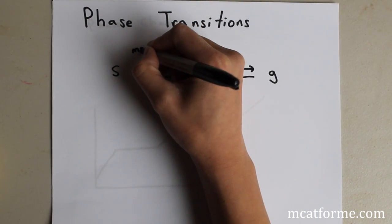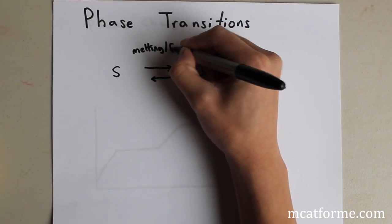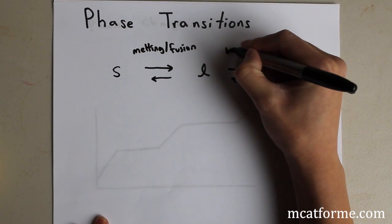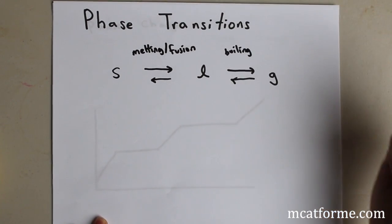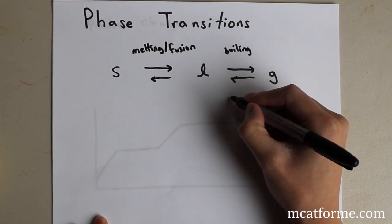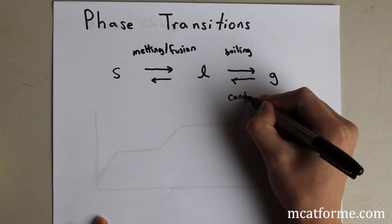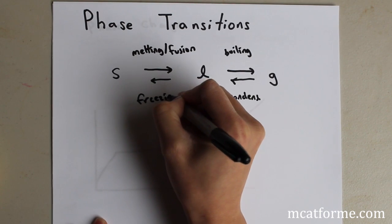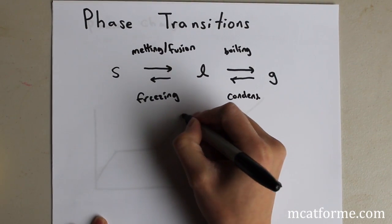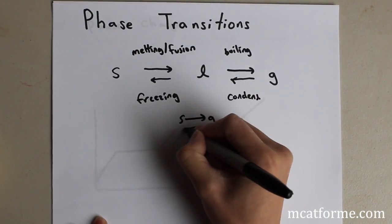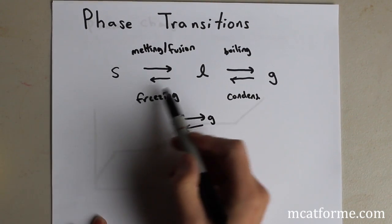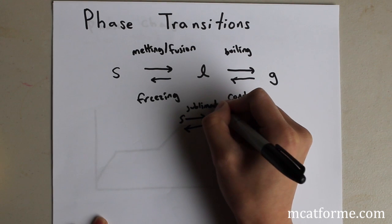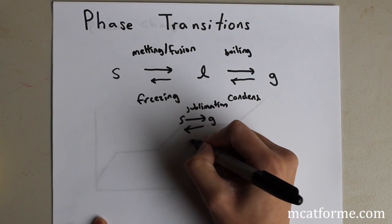Solid to liquid is melting, also called fusion. Liquid to gas is boiling, also called vaporization. Gas to liquid is condensation, and liquid to solid is freezing. We also have to be aware that solid to gas — skipping liquid — is sublimation, and gas to solid is deposition.